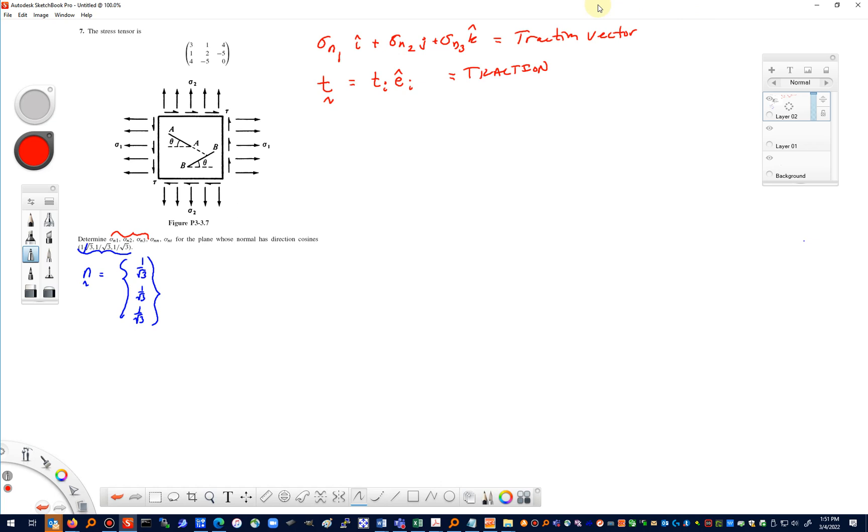We saw in the lecture that in order to find the traction vector components we would use the formula σ_ij n_j. We have a symmetric stress tensor, so σ_ij n_j will still work. We can do this and we will get the exact same equations that I just showed you.